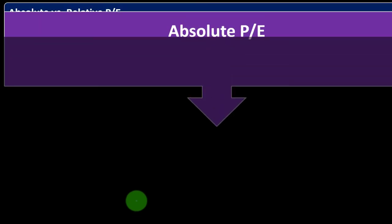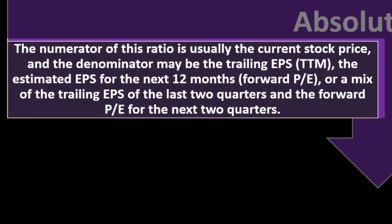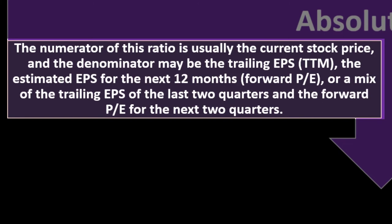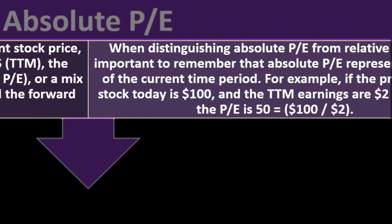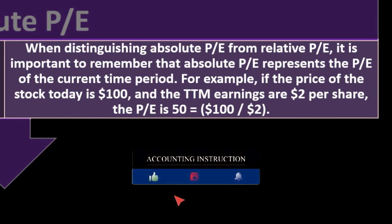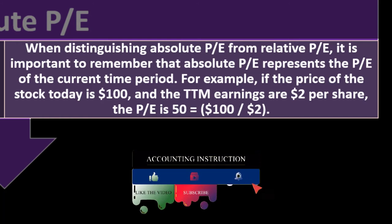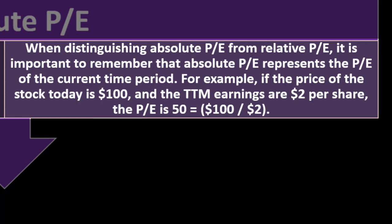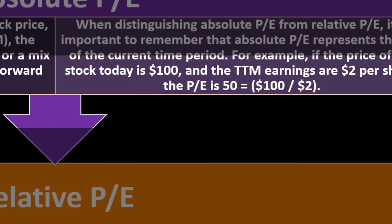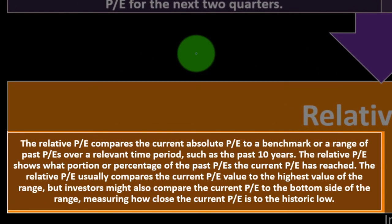Absolute versus relative PE: Analysts may make a distinction between absolute PE and relative PE ratios. Absolute PE: the numerator is usually the current stock price, and the denominator may be trailing EPS, estimated EPS for the next 12 months (forward PE), or a mix of the last two trailing quarters and the next two forward quarters. The absolute PE represents the PE of the current time period — for example, if the stock price is $100 and TTM earnings are $2 per share, the PE is 50 (100 divided by 2).